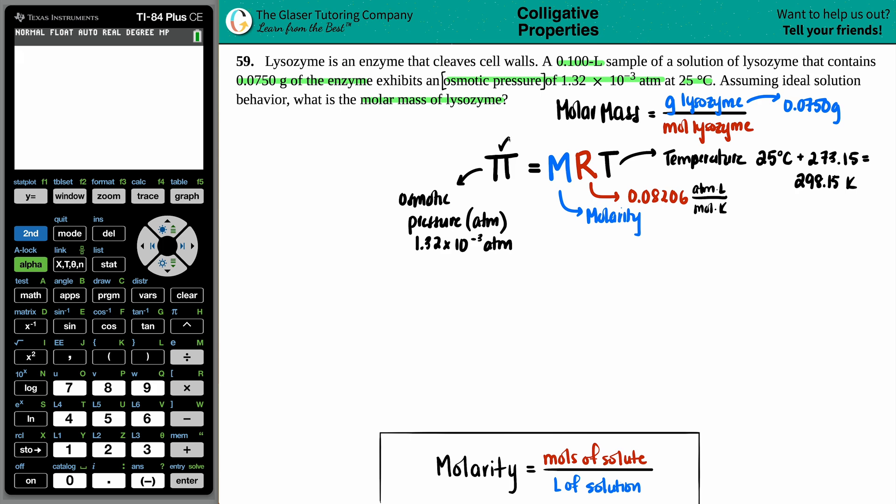So we have the osmotic pressure. Check. We have the R value. Check. We have the temperature. Check. We are solving for the molarity. That will give us one step closer to finding those moles. So let's plug it in.